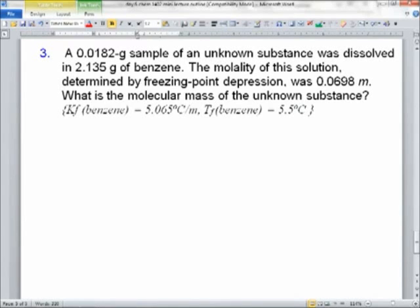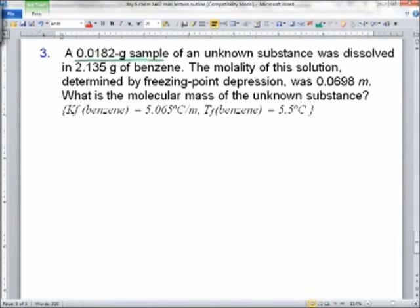We have, let's start underlining stuff. We have a 0.0182 gram sample of an unknown substance. It was dissolved in 2.135 grams of benzene. The molality of this solution was 0.0698m. What is the molecular mass of the unknown substance?